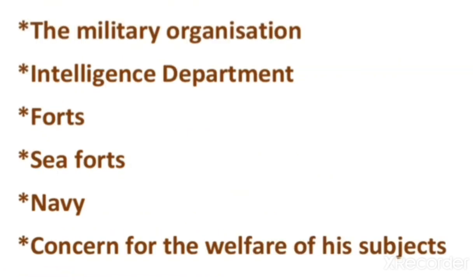The military organization: there were two main divisions of Shivaji Maharaj's army — infantry and cavalry. In the infantry there were officers such as Havaldar, Jumledar, etc.; the chief was called Sarnobat. In the cavalry there were two types: Shiladas, who had their own horse and weapons, and Bargis, who were provided horse and weapons by the state. For the intelligence department: it was necessary to protect the Swaraj from enemies, and the intelligence department obtained precise and timely information about enemy movements for Maharaj.